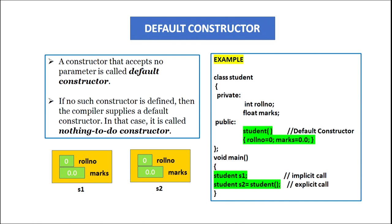In the second statement 'student S2 = student()', this is an explicit call of the default constructor. An object S2 will be created and memory is allocated to its data members roll number and marks, and the default constructor will be invoked and assign the value 0 to roll number and 0.0 to marks. Very important to note: if no such constructor is defined, then the compiler supplies a default constructor, and in that case it is called a 'nothing to do' constructor.